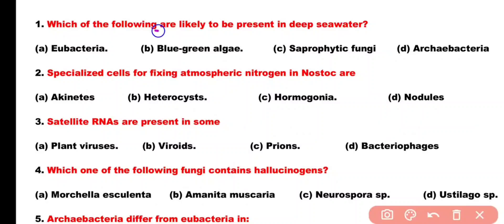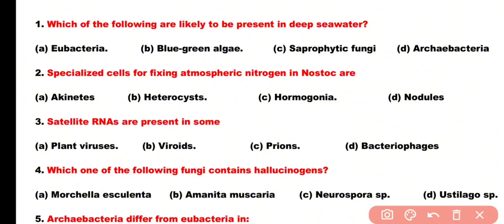Question number 1: Which of the following are likely to be present in deep sea water? Options: bacteria, blue-green algae, saprophytic fungi, archaeobacteria. Correct answer is option D. Archaeobacteria are present in deep sea water.